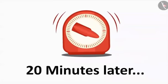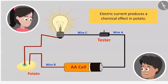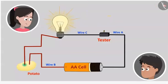And then observe the potato piece. Look, Bhaiya, there is a greenish blue spot near one of the wires inserted into the potato piece. Yes, that is because the electric current produced a chemical effect in the potato. Oh wow, this is interesting.